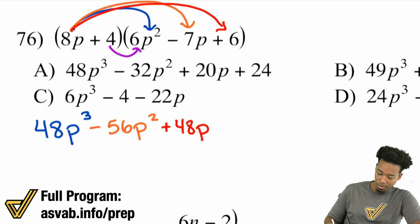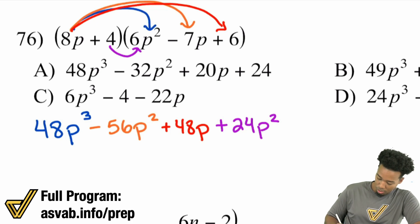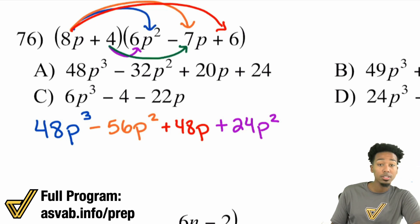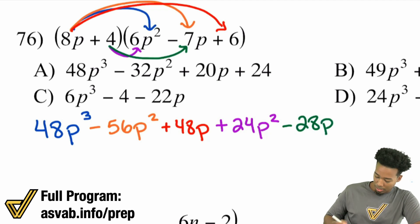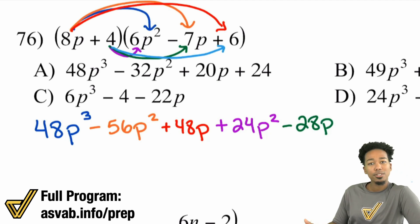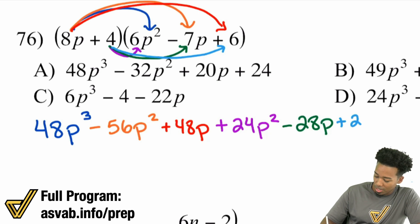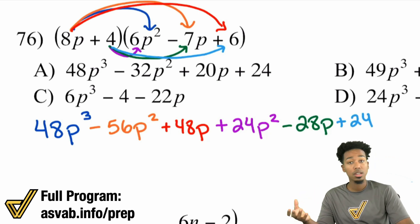Now let's take care of the 4. The 4 multiplied by 6p² gives us 24p². Next, 4 times negative 7p — negative times a positive is negative — 4 times 7 is 28, so negative 28p. And lastly, 4 times 6 is 24. The biggest thing to watch out for are those signs. As long as you take care of the signs and multiply correctly, you're good.